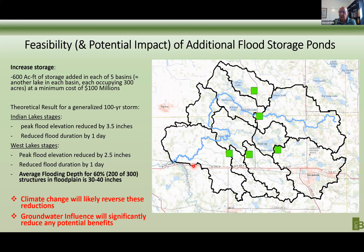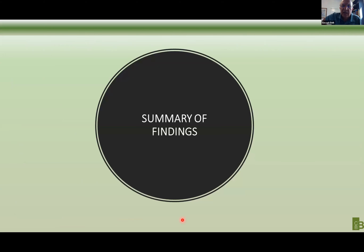Two important points: first, we talked about climate change — elevations are going to increase somewhat, so what we would gain by building those ponds, climate change will take away in short order. Second, groundwater influence was significant to reduce any potential benefits in this particular system because it's not a runoff-driven system. As Bob pointed out, only about 20% of rainfall ends up as runoff, so we don't really have control over the entire rainfall coming into here.